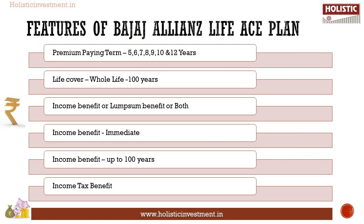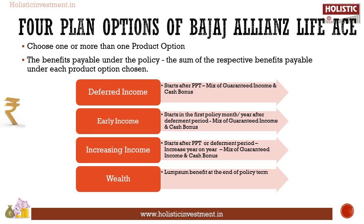Tax benefits on premium paid and benefits received are available as per income tax laws. Now let us look at the four plan options of Bajaj Allianz Life IS. You have the flexibility to choose one or more than one plan option to create the financial plan that best suits your requirements. The benefits payable under the policy on survival, maturity, surrender, and death will be the sum of the respective benefits payable under each product option chosen.